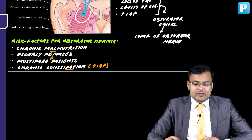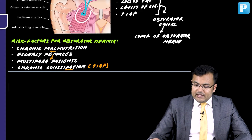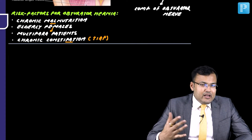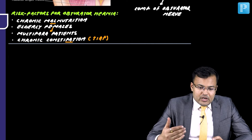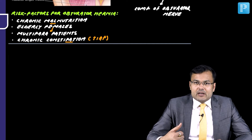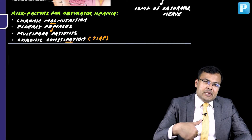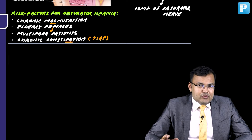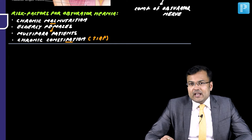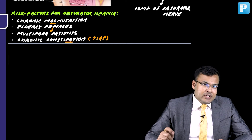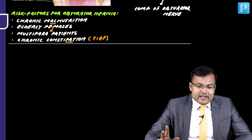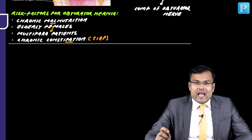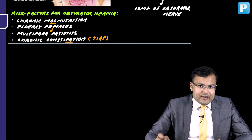Coming to the manifestations: whenever there is herniation of small bowel into the obturator canal, there is compression of the obturator nerve. These patients complain of pain along the medial aspect of the thigh radiating to the ipsilateral knee joint. This sign is known as Horship-Romberg sign. The second sign is absence of obturator reflex, known as Hannington-Kiff sign.